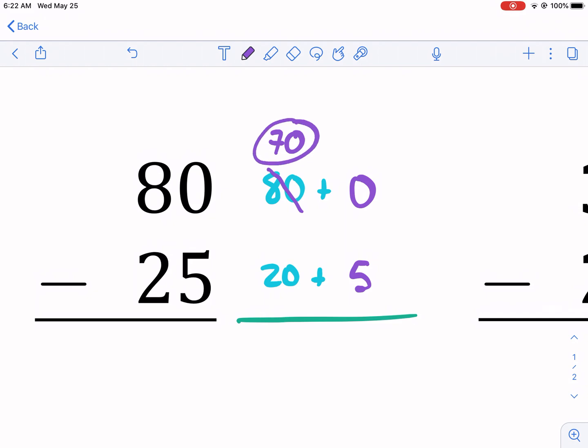And the reason we can do that is we can still do 70 minus 20. That still works. But now we can change this. Instead of 0, we're going to do 0 plus 10.